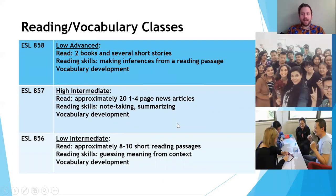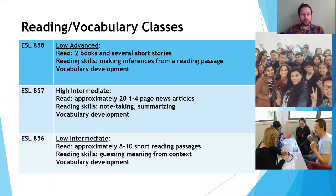Our final group of main core classes are reading and vocabulary. In ESL 856, our low intermediate reading class, you will read approximately eight to ten short reading passages and learn skills such as guessing meaning from context, while also developing your vocabulary. In ESL 857, our high intermediate class, you will read 20 one to four page news articles, building your reading fluency and learning note-taking and summarizing skills. In our highest level, ESL 858, low advanced, you will read two books and several short stories, develop skills such as making inferences, and continue to build your vocabulary.